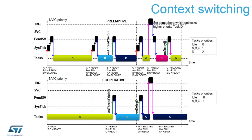On this slide you can see how the two different strategies — cooperate and preemptive — work among the tasks, and when the state of tasks changes. With the preemptive mode, there are many more task switches, so it takes a little bit more CPU resources.